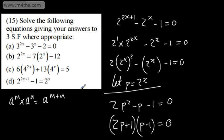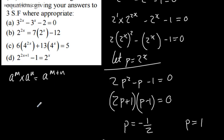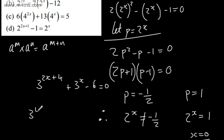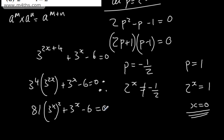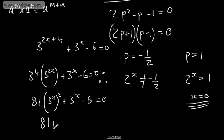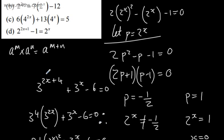That one is slightly trickier, but it's just rules of indices. For example, if you had 3 to the 2x plus 4 plus 3 to the x minus 6 equals 0, you would write this as 3 to the 4th multiplied by 3 to the 2x plus 3 to the x minus 6 equals 0. This gives 81 times 3 to the x squared plus 3 to the x minus 6 equals 0. So letting p equal 3 to the x gives 81p squared plus p minus 6 equals 0, and you can find the solutions from there.